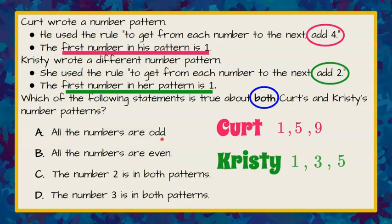Answer choice A says all the numbers are odd. Well Kurt's numbers are one, five, and nine. None of those are evenly divisible by two, so they're odd. And Christy's numbers are one, three, and five. Again none of those are even. These are all odd because they're not divisible by two. So it looks like A is our right answer.